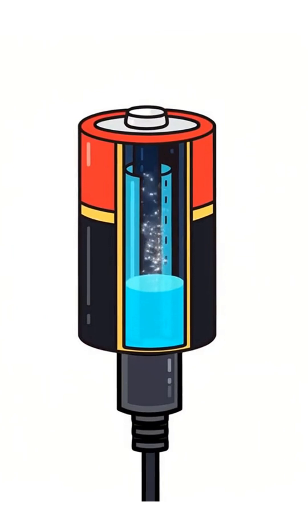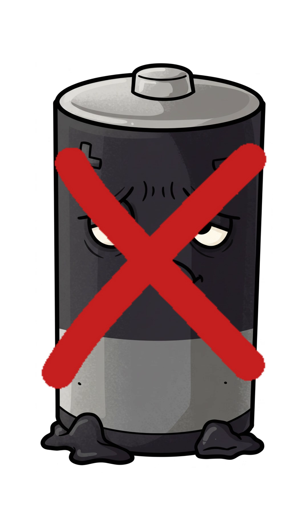Rechargeable batteries reverse the chemical process using external power. Disposables? Once the chemistry is done, they're finished.